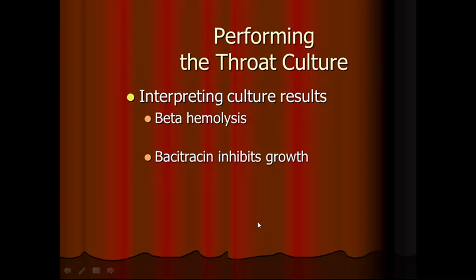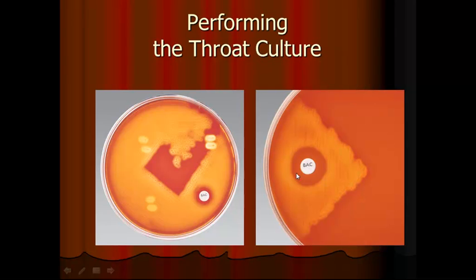Interpreting the culture results: if beta hemolysis is present, the bacitracin inhibits growth around the bacitracin disc. As you can see, beta hemolysis has occurred throughout the blood agar plate and the bacitracin disc has developed a clear field around it.